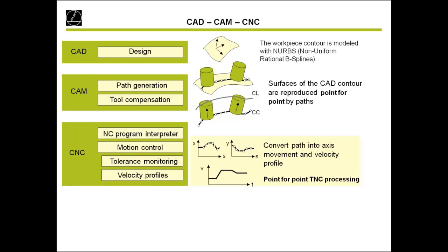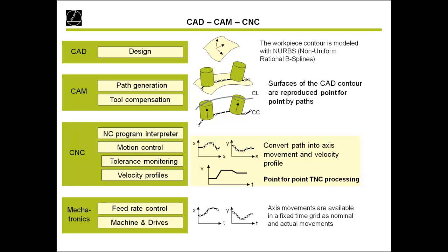Heidenhain is responsible for the program interpreter, motion control, tolerance management, and also we need to watch the axes — how fast we get the axis up to speed. This all belongs to the CNC control. Of course, with CNC control alone we cannot mill anything. We also need the mechanics: feed rates, the machine, the drives, and everything. We also need to compensate tolerances from the mechanical machine. With all these topics together we want to achieve the best surface quality on the milling machine.